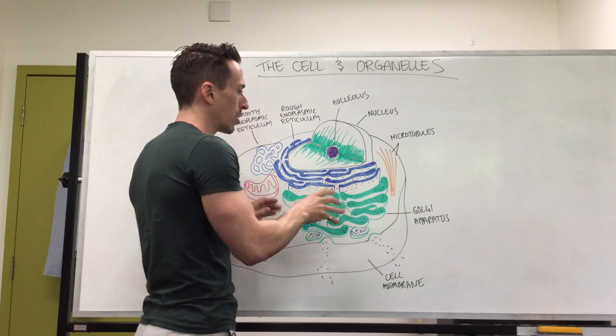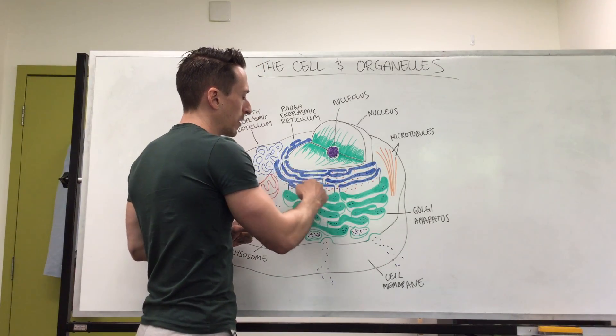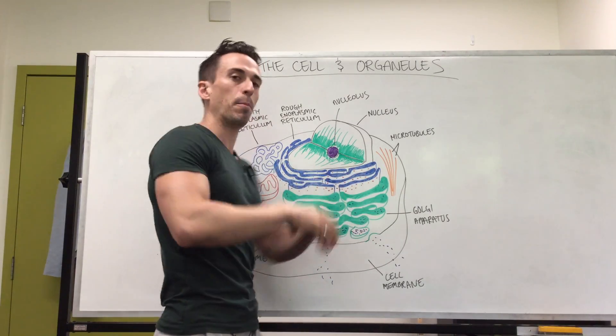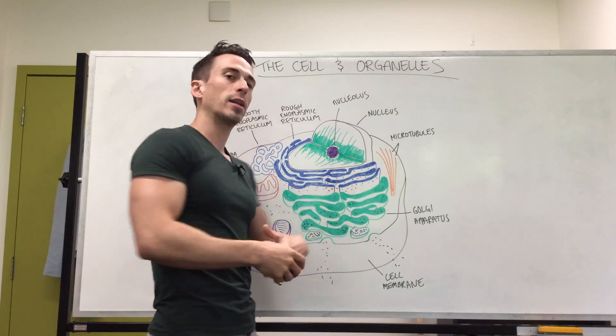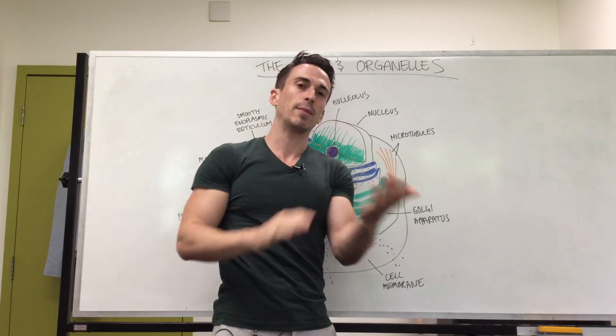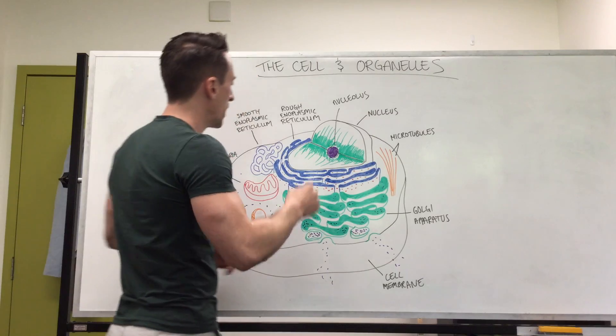You can think of it as though this is the factory — the rough endoplasmic reticulum making the product — and the Golgi apparatus is like the post office, putting the stamps on it and determining where it goes.